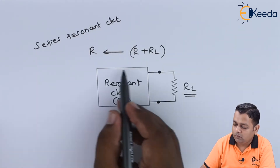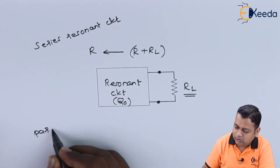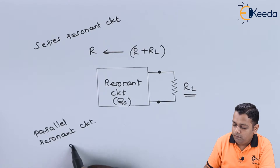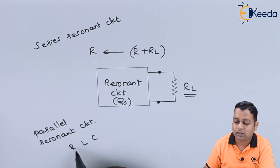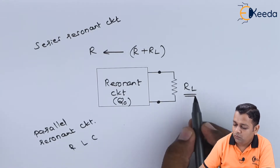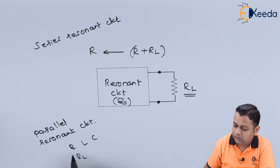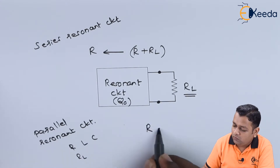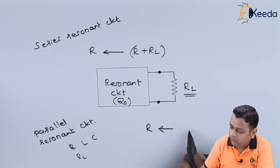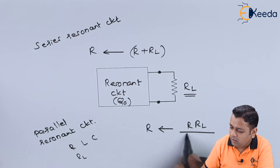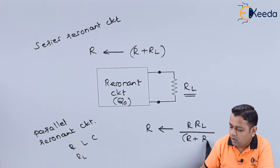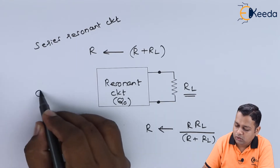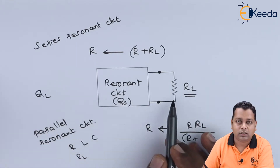For the parallel resonant circuit, R_L is connected in parallel with the pure resistance R. The equivalent resistance then becomes R·R_L divided by (R + R_L), replacing the individual R in the circuit.